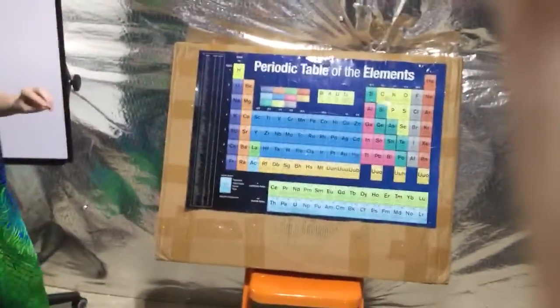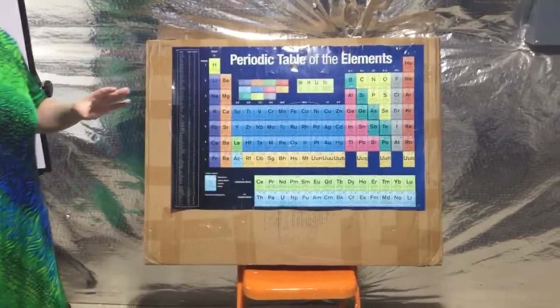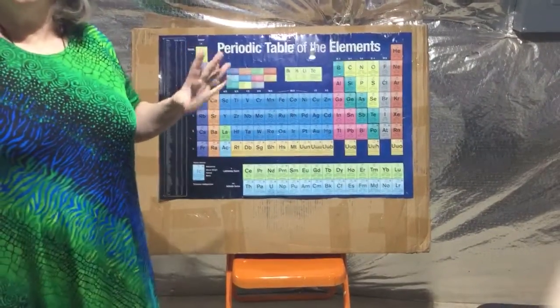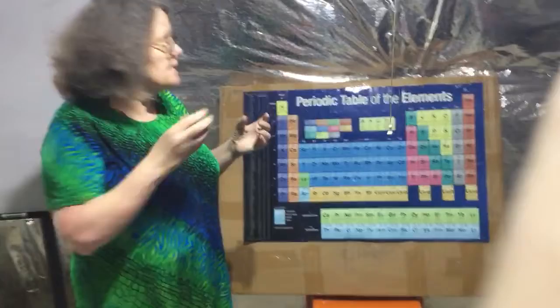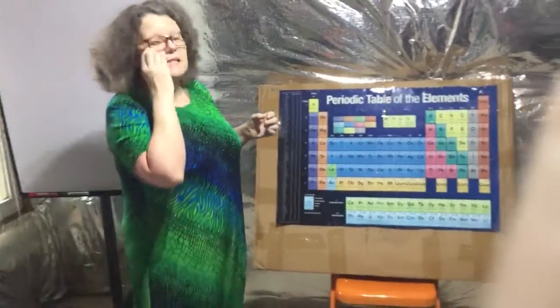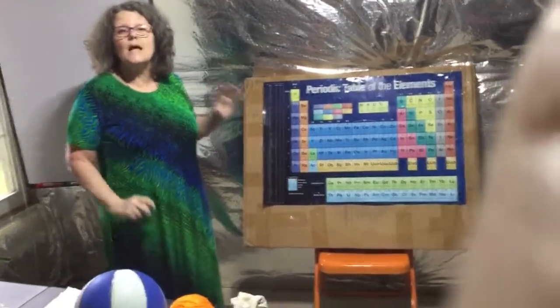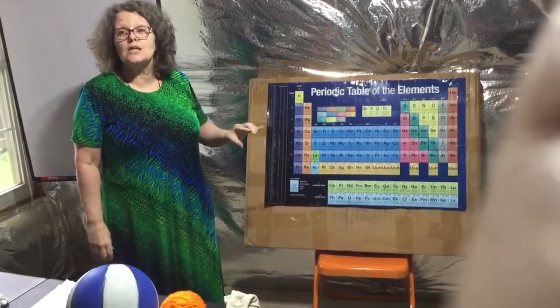I want to talk briefly about electronegativity because this is super important. The electronegativity is an invention. Linus Pauling said he could give elements a number from 0 to 4.0 and grade how well they attract electrons.